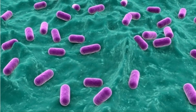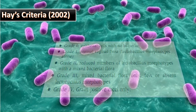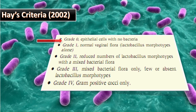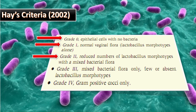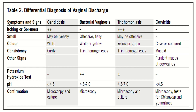The Hay/Ison criteria was introduced in 2002. Grade zero means epithelial cells with no bacteria. Grade one means normal vaginal flora — Lactobacillus morphotypes alone. Grade two means reduced numbers of Lactobacillus morphotypes with a mixed bacterial flora. Grade three means mixed bacterial flora with few or absent Lactobacillus morphotypes. Grade four means Gram-positive cocci only.